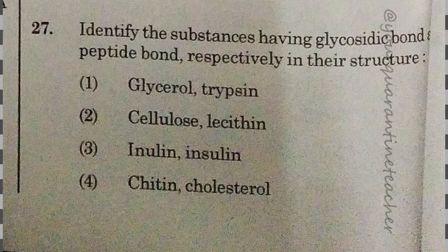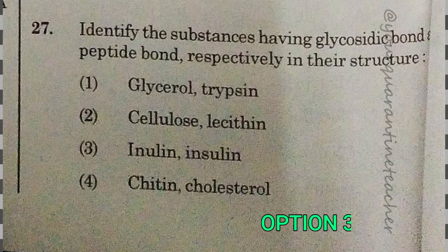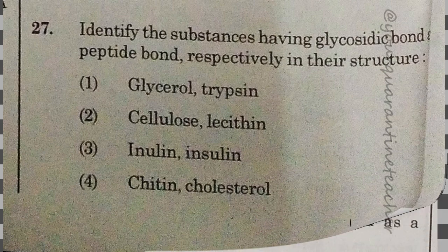27th question: identify the substances having glycosidic bond and peptide bond respectively in their structure — one carbohydrate, one protein. The answer is option 3 — inulin and insulin.